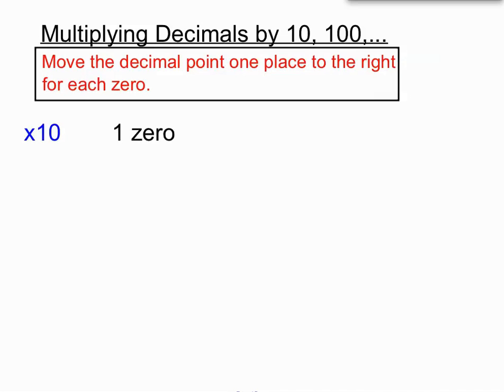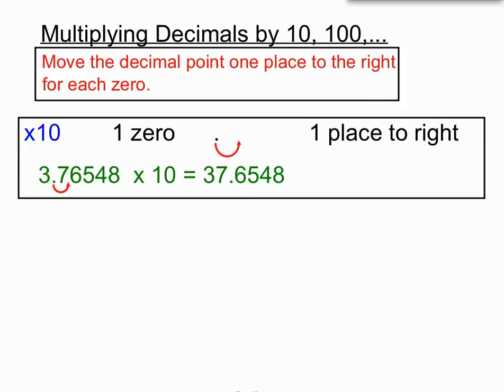If we're multiplying by 10, now 10 has one zero, so we'll move the decimal point one place to the right. We've got 3.76548. The decimal point at the moment is after the 3, but we're going to move it one spot to the right. The decimal point has moved to be between the 7 and the 6 in our answer, 37.6548, because we were multiplying by 10.